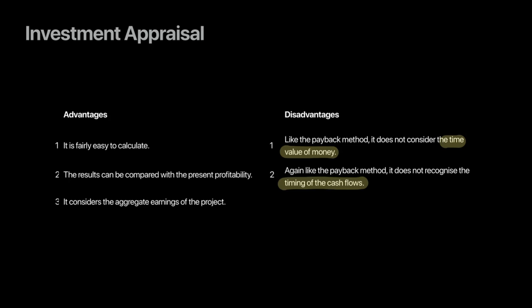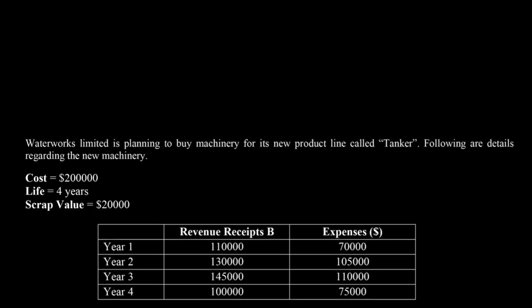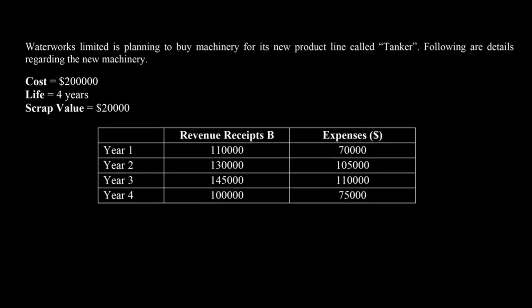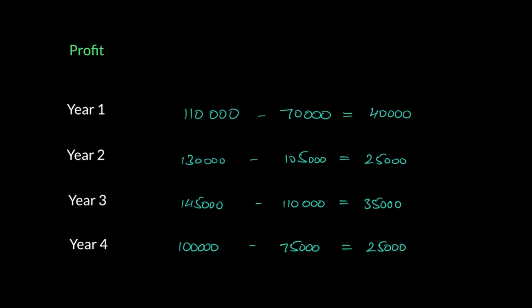Now let's apply this to our previous example to calculate ARR. Referring back to the question we worked through earlier — a machine with cost $200,000 — we already calculated profits over its lifetime: $40,000, $25,000, $35,000, and $25,000 for years one through four. We focus on profit here, not net cash flows, as ARR does not require cash flows.